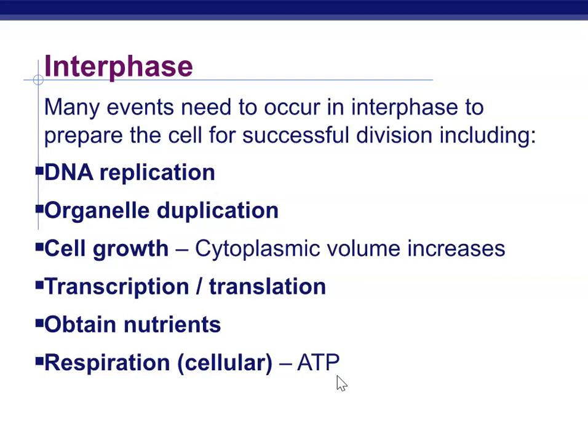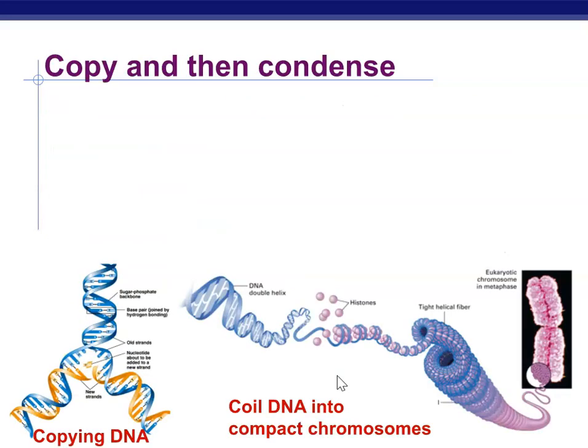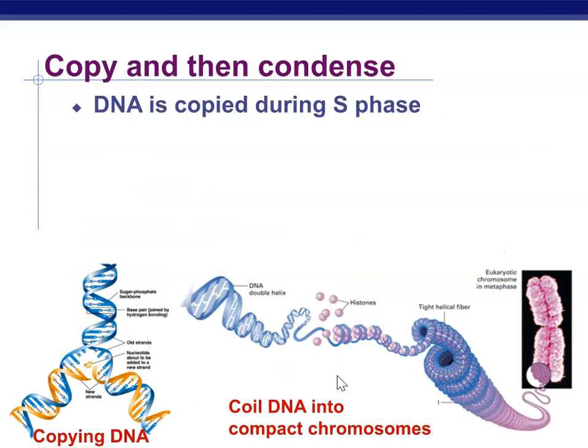An easy way to remember what happens in interphase is the mnemonic DOCTOR: D for DNA replication, O for organelle duplication, C for cell growth, T for transcription and translation, O for obtaining nutrients, and R for respiration. During S phase, DNA is copied — we just reviewed DNA replication.